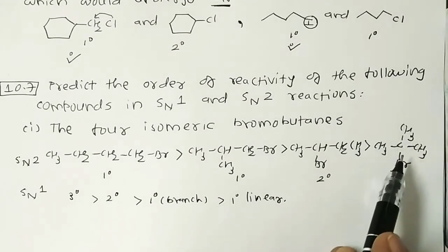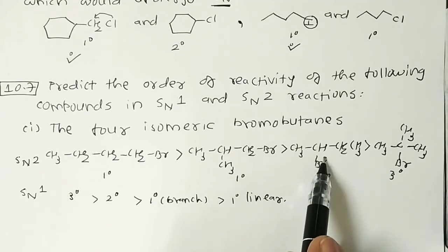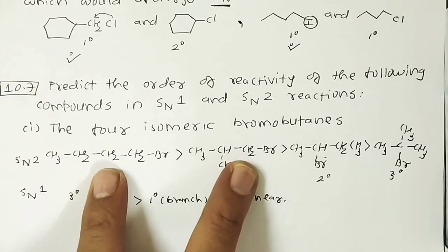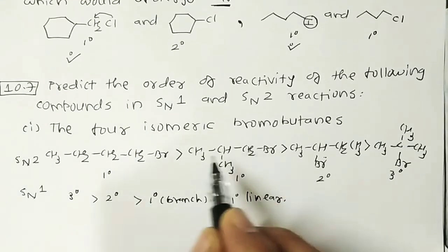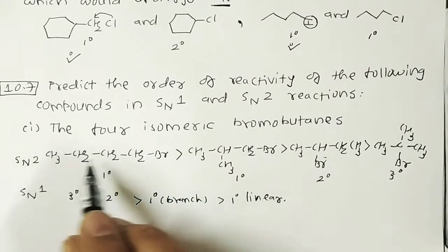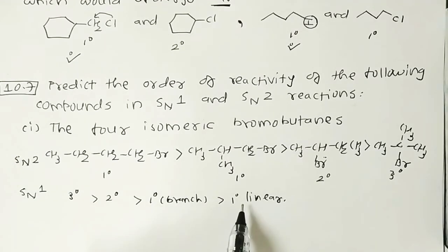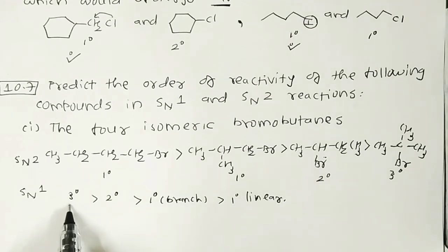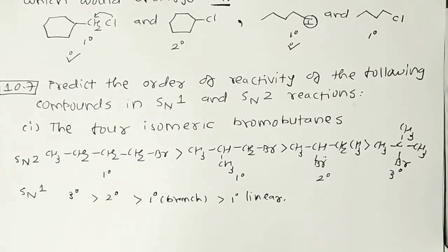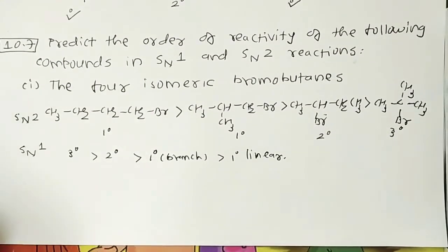For SN1, the order is exactly the reverse of SN2. Tertiary carbocations are most stable, then secondary, then primary. Among the primary compounds, the branched one (1-bromo-2-methylpropane) is slightly favored over linear (1-bromobutane) due to inductive stabilization from the methyl group, but the overall SN1 order is: tertiary > secondary > primary branched > primary linear.